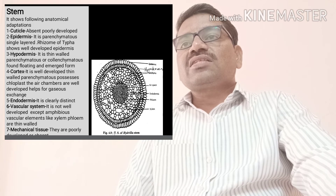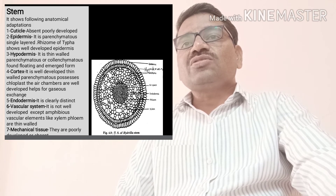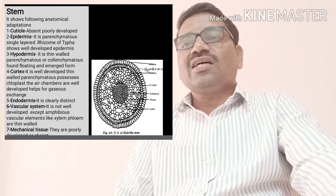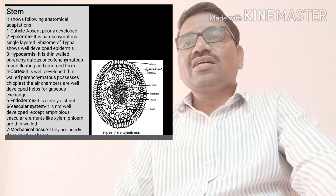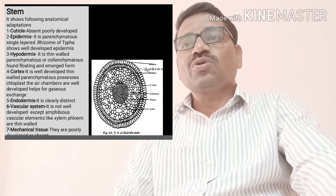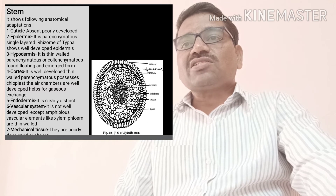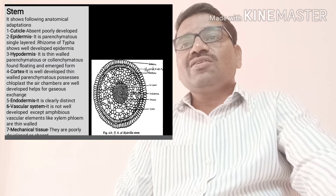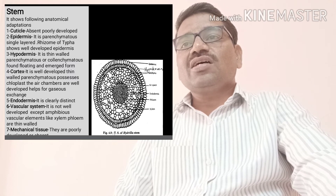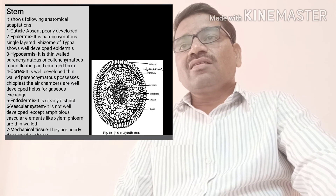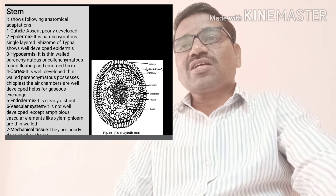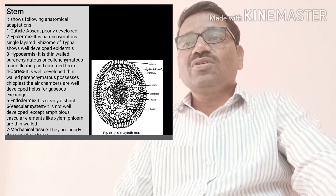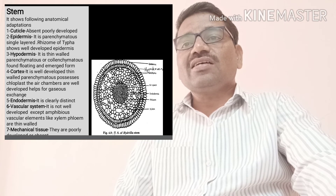In stem anatomy, the following anatomical adaptations are observed. In the transverse section, the outer layer — the cuticle — is absent, but in some plants it is poorly developed. Below the cuticle, there is a single-layered parenchymatous epidermis. The rhizome of Typha shows a well-developed epidermis. Below the epidermis, there is hypodermis — thin-walled, parenchymatous or collenchymatous — found particularly in floating and submerged forms.